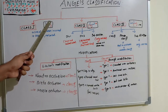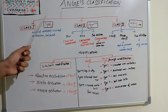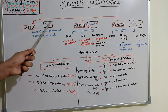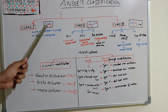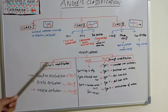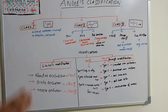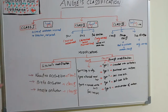In Class 1, the mesio-buccal cusp will coincide with the buccal groove of the lower first molar. This classification is based on the molar relationship. The upper first molar's mesio-buccal cusp will coincide with the lower first molar's buccal groove. The occlusion is proper but the line of occlusion will be incorrect — there will be rotation, malposed teeth, and crowding in anteriors.